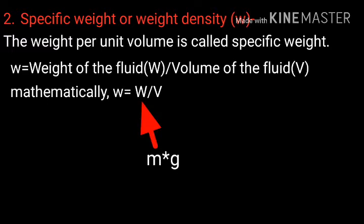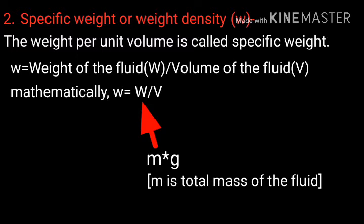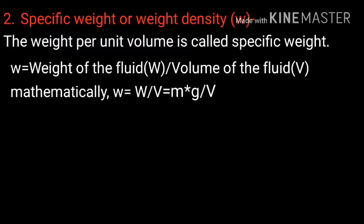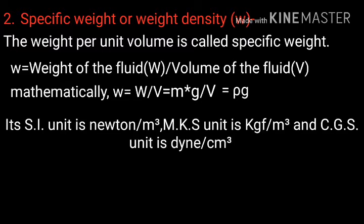As capital W equals to M into G where M is the total mass of the fluid, then w = mg/V. As m/V equals to ρ, this equals to ρg. Its SI unit is Newton per meter cube, MKS unit is kgf per meter cube, and CGS unit is dyne per centimeter cube.